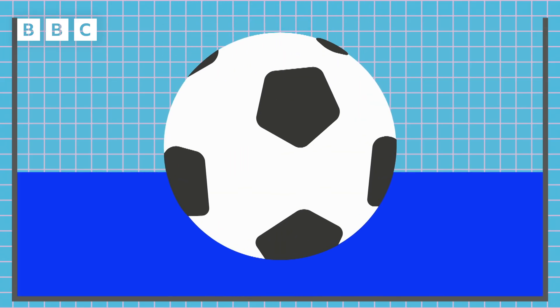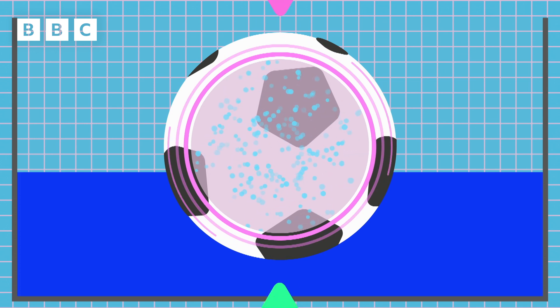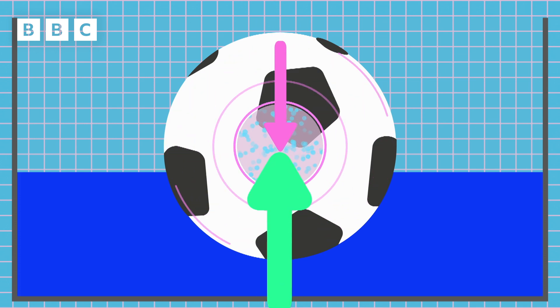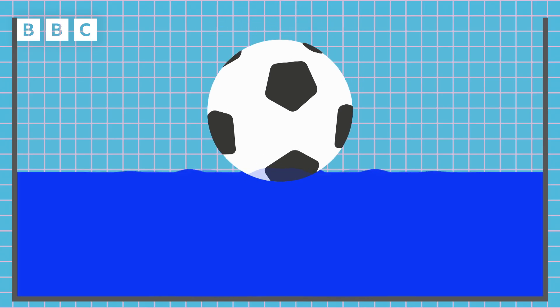A football is less dense because it's filled with air. The effect of gravity is less than the upthrust, so it floats. It is buoyant.